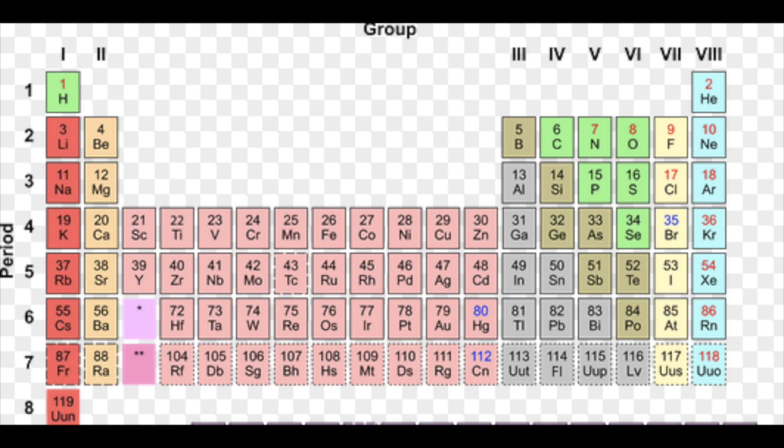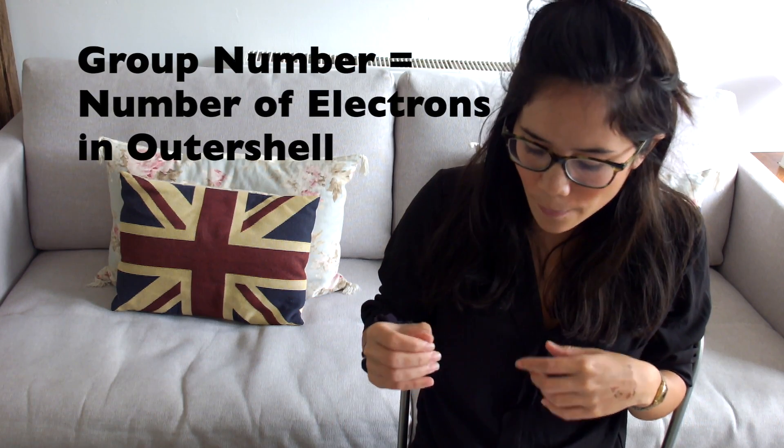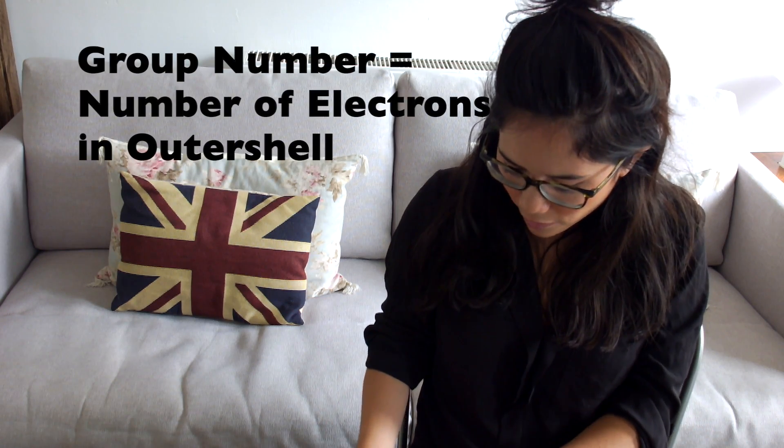Any element in group one — and remember, that's the vertical column in the periodic table — will have one electron in that outer shell. So the group number tells you the number of electrons in the outer shell. Let's use group seven as an example. I would predict that group seven elements have seven electrons in the outer shell. If we look at chlorine, it has 17 electrons, which fills up two, eight, seven — and yes, it has seven electrons in its outer shell.